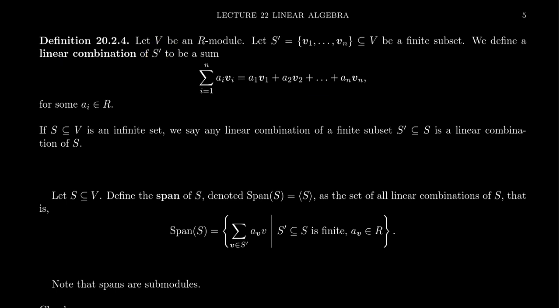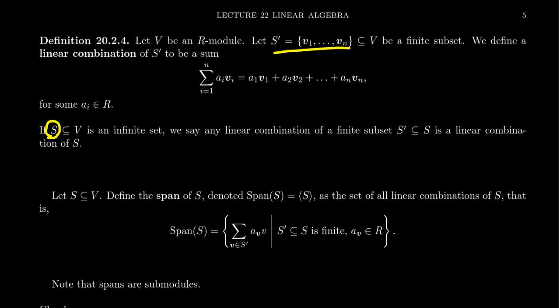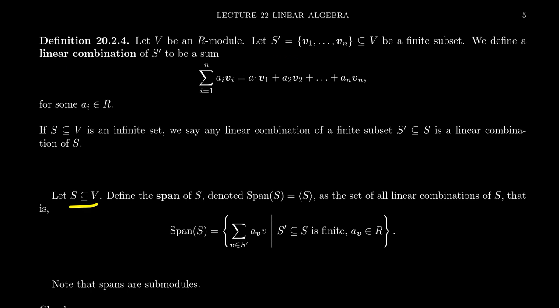That defines linear combinations when S' is a finite set. If S is instead an infinite set, a linear combination of elements in S comes from some finite subset S' of S, and a linear combination over S' is also a linear combination over S. So for an infinite set, you just restrict to finite subsets to get your linear combinations.